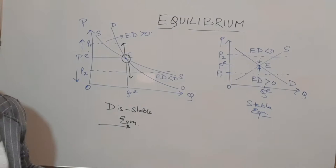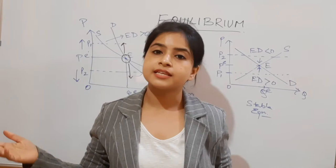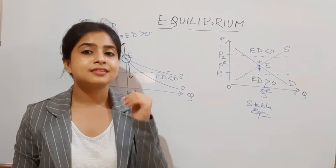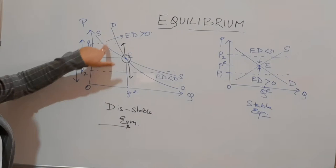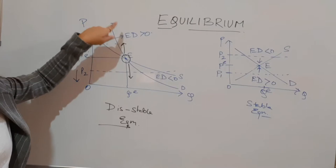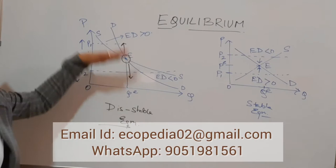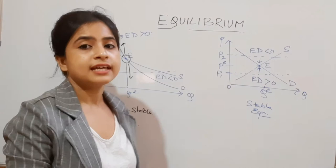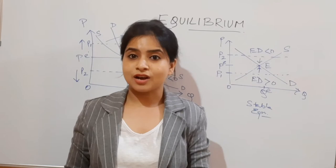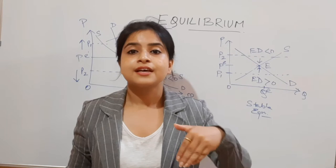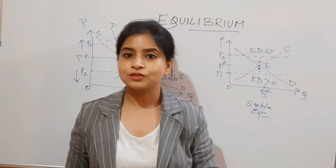It's important to keep in mind the conditions for stable versus unstable equilibrium. Equilibrium is stable when the demand curve cuts the supply curve from below. In the unstable case, the demand curve is cutting the supply curve from above, which is why the equilibrium deviates away from point E rather than returning to it. The demand curve must cut from below for stable equilibrium. Now let's move to the Walrasian and Marshallian adjustment equilibrium.